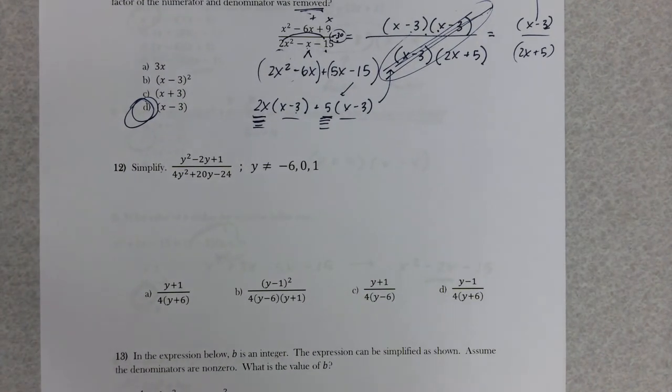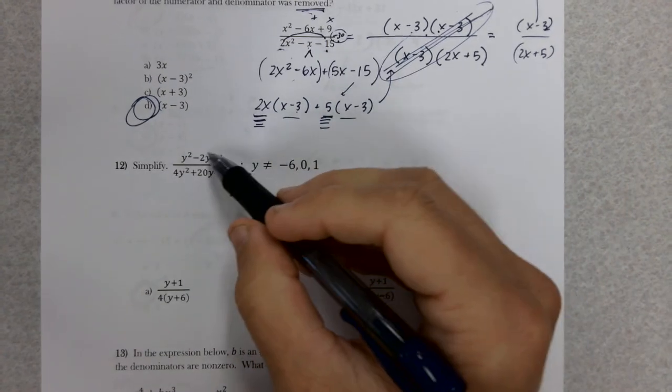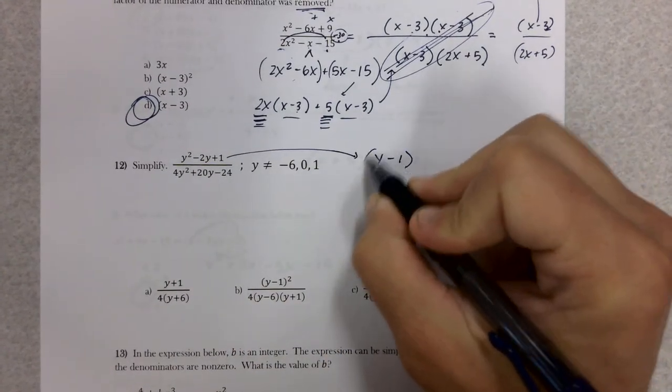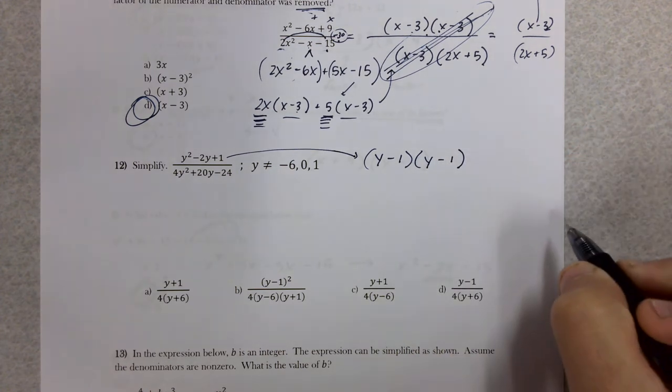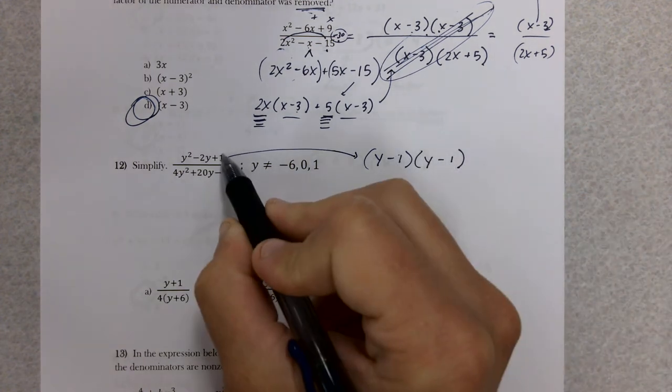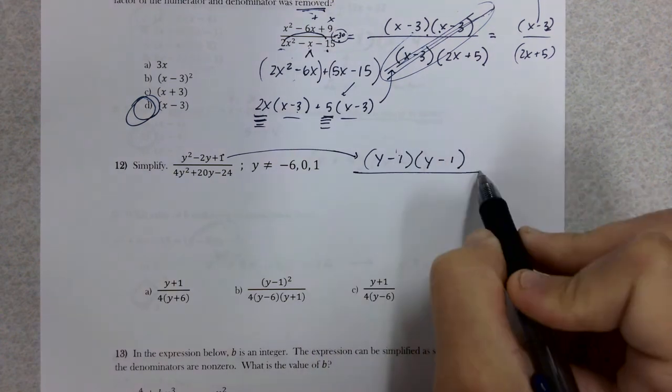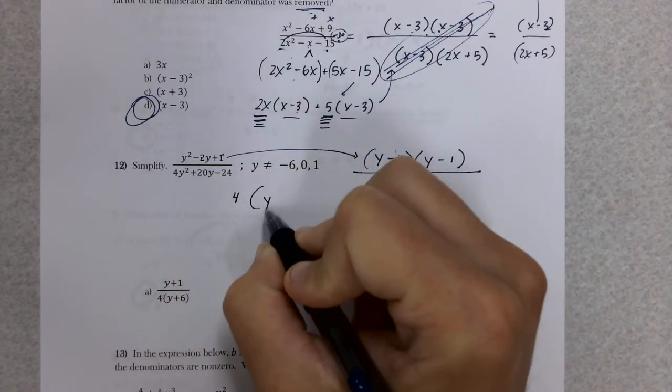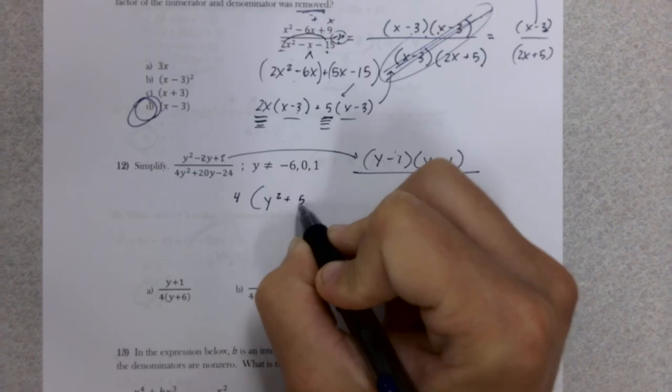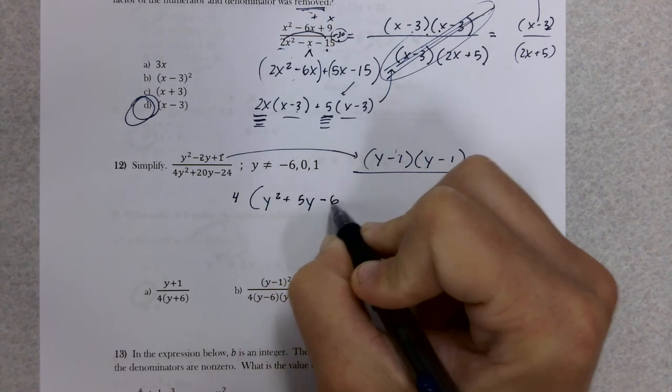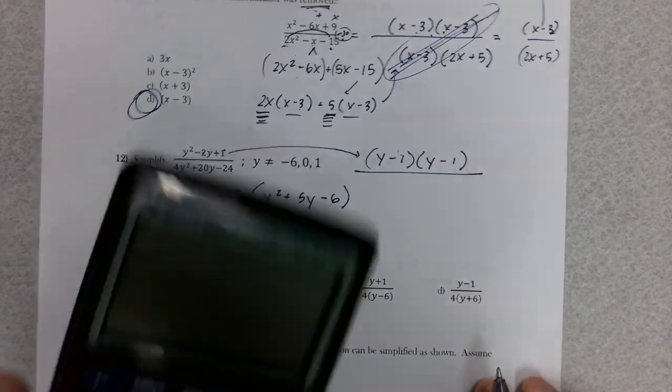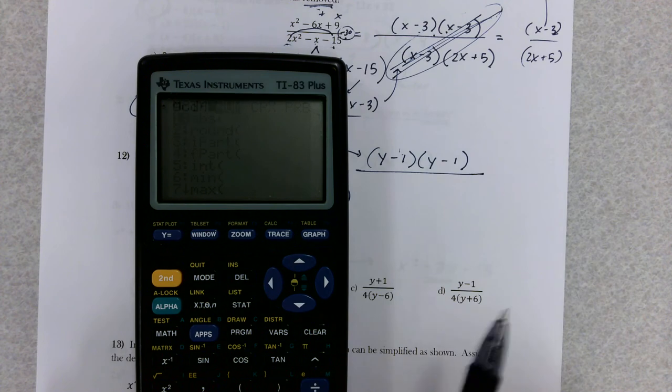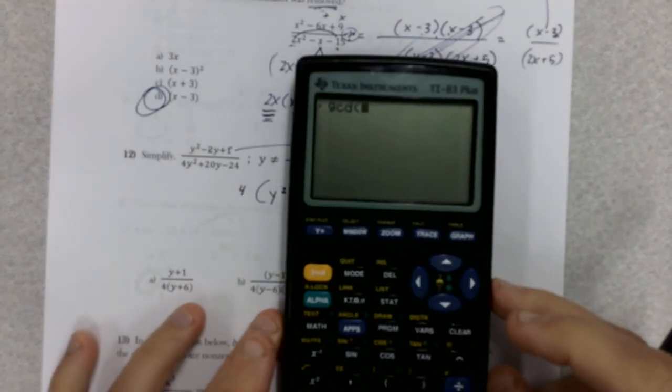Number 12, same thing. Let's factor this. Factor the numerator, which looks like one of those trinomials. Hopefully you came up with y minus 1 and y minus 1, because negative 1 times negative 1 gives you that positive 1, and if I add those I'll get that negative 2. The denominator, it looks like I've got a GCF first of a 4. Remember from last unit how to check for a GCF. Math, then scroll over to the number column, number 9.